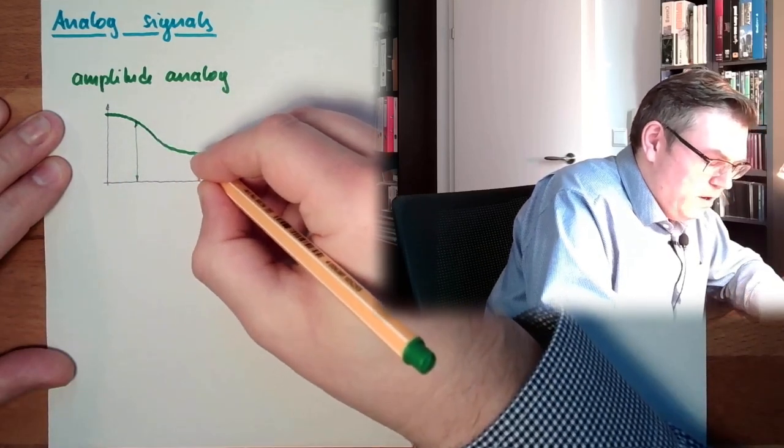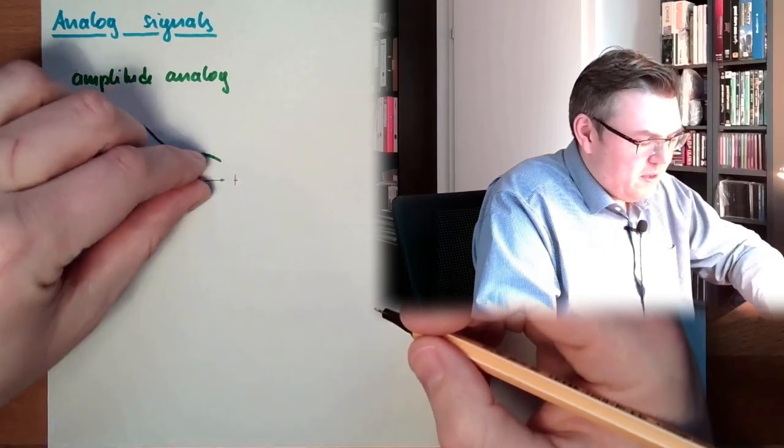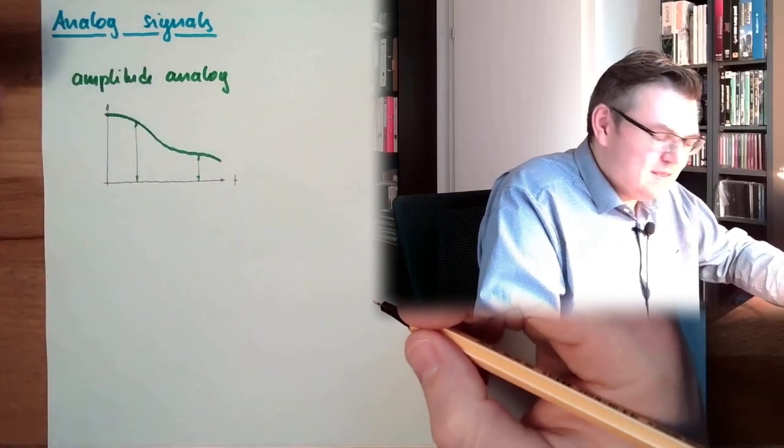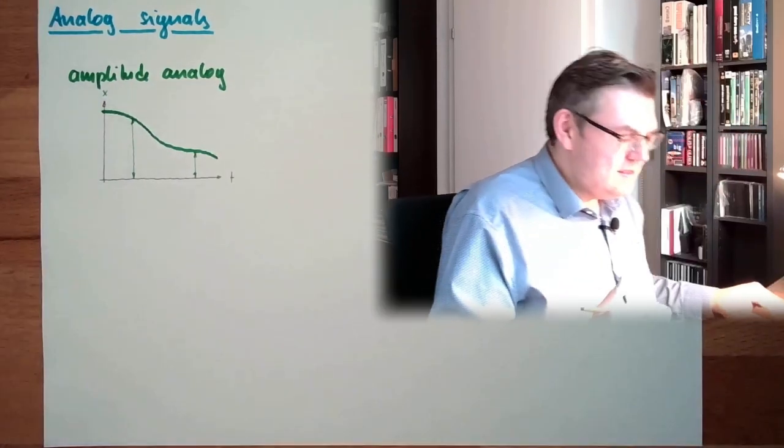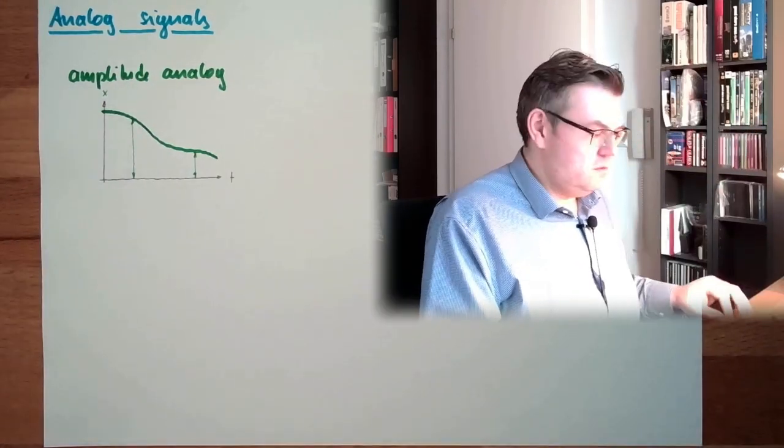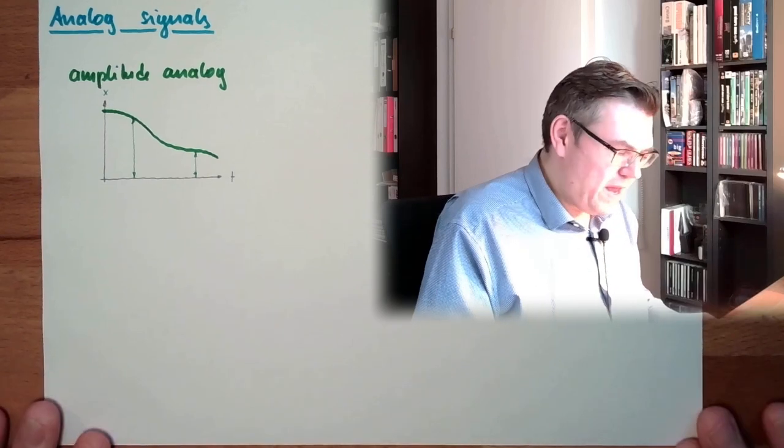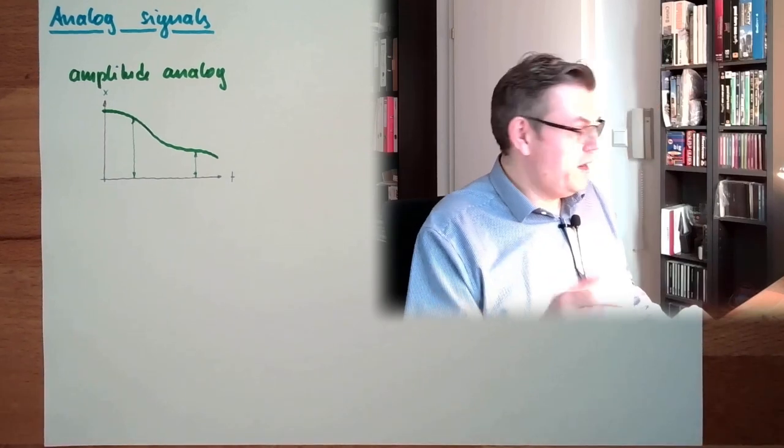At this point in time, we have a low value. So the strength, the signal strength, is the information. This is called amplitude analog.